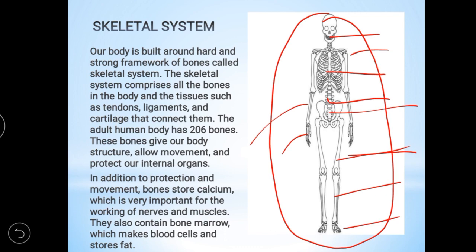Like when building a construction, workers first make an iron rod framework, put the basement, and insert the iron rods inside — and then start to build. Similarly, our bones are like the backbone and are the total framework of the body. If there is no bone, we would be like an amoeba and cannot move. That is called the skeletal system.